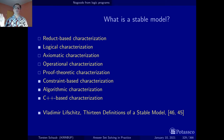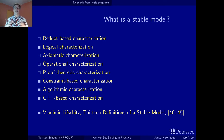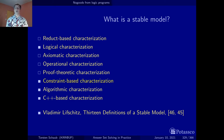And once we have this, we are ready to go. Just keep in mind: once we have our set of no-goods, we only need unit propagation and a search algorithm on top of it. So what we do now is look at a characterization of stable models in terms of Boolean constraints or no-goods.